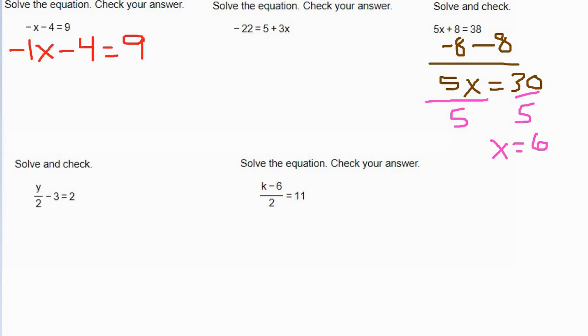We need to get rid of the stuff that's on the same side of the letter but not touching it. The opposite of negative 4 is positive 4, so I'm going to add 4 to both sides. That gives us negative 1x equals 13. And the opposite of multiplying a number by negative 1 is to divide it by negative 1. We divide both sides by negative 1, and we get x equals negative 13 for our answer.